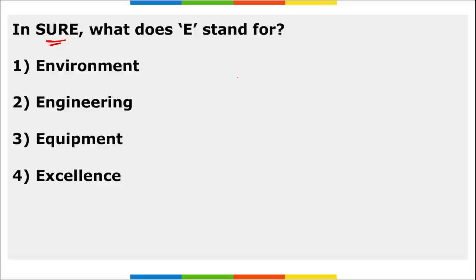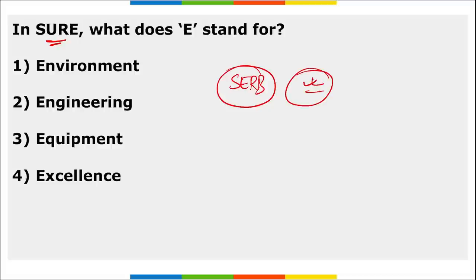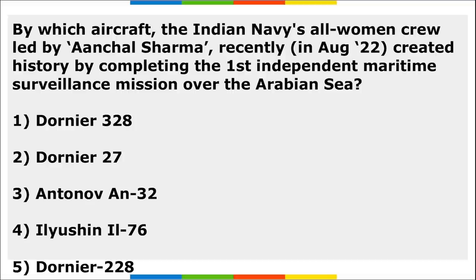SERB, the Science and Engineering Research Board under the Ministry of Science and Technology, recently introduced a new innovative scheme named SURE to create a research and development ecosystem. SURE stands for State University Research Excellence. This scheme forces collaboration for high-end research and enhances research capabilities in a structured way to create a healthy R&D ecosystem in state universities and colleges.